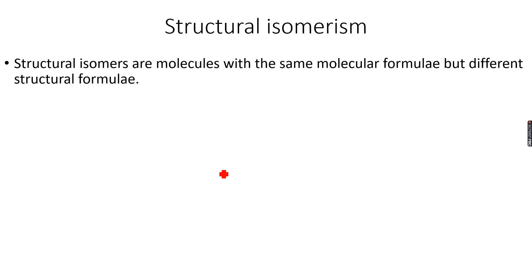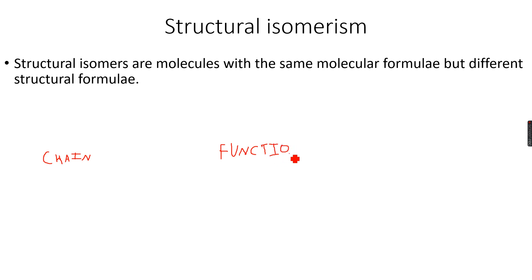Now, structural isomerism — you have done this in your IGCSEs but we will go through it again. Structural isomers are molecules with the same molecular formula but different structural formulas. There are actually different types of structural isomerism: there is chain isomerism, functional group isomerism, and positional isomerism. We'll go through all of them.